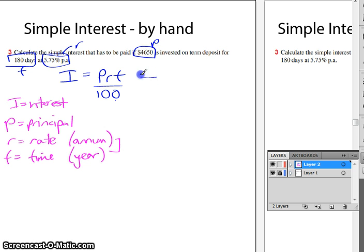So basically we use this rule that we've got. And we can see that I will equal, and we're substituting the numbers we've got. 4,650 times the rate, which is 5.75, times it by the 180 days. Remembering that it's a fraction of a year, which is 180 out of 365. And all of that is divided by 100.